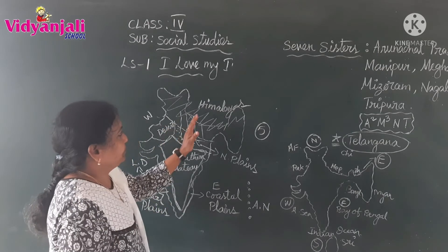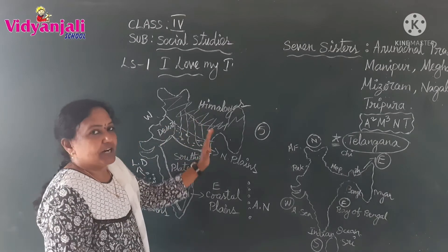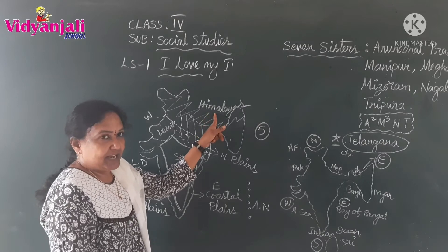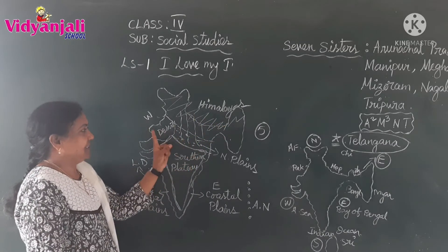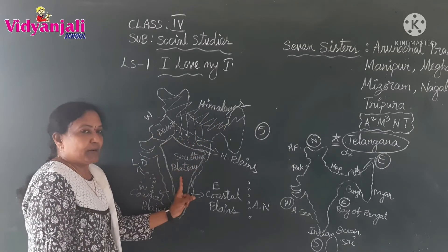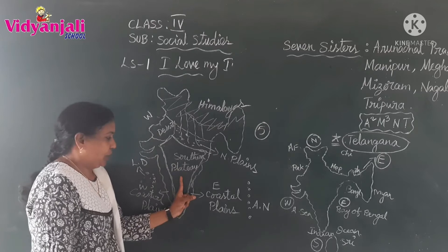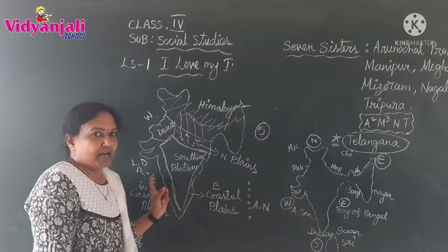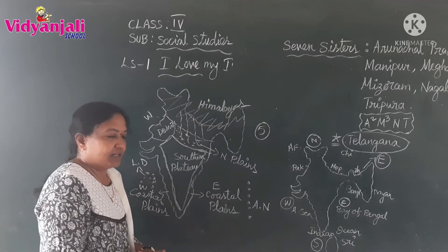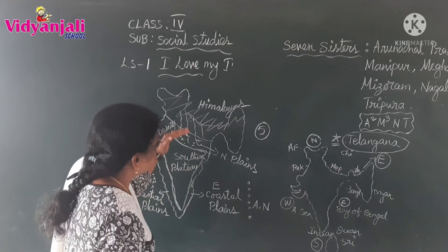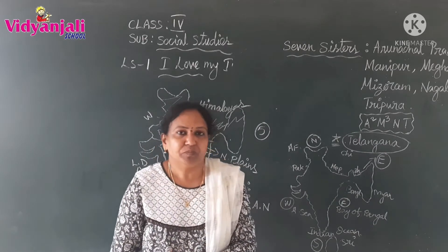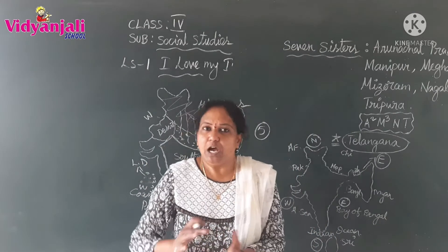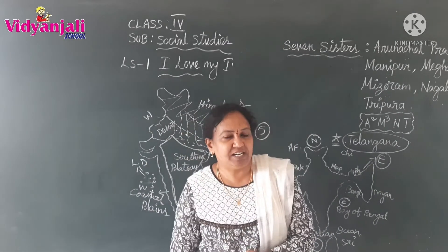Our country is divided into five physical divisions. First, the Northern Himalayas. Next, Northern plains. Then, Western desert. Southern plateau. And coastal plains. And also our Andaman and Nicobar and Lakshadweep islands. Today we have discussed the physical divisions of India and also the political divisions of India.